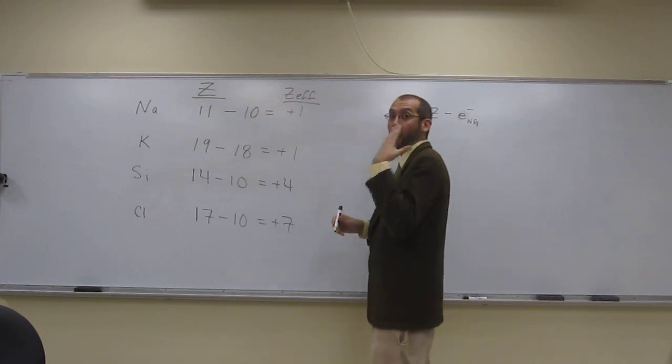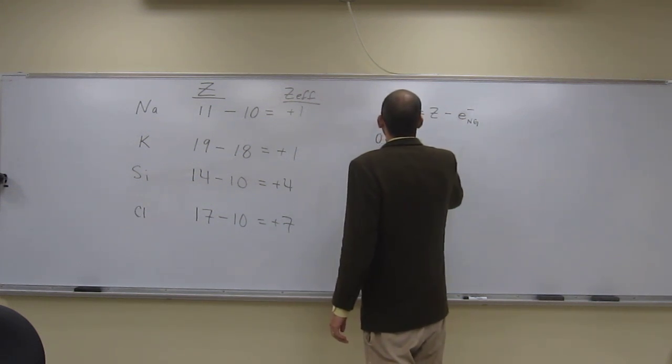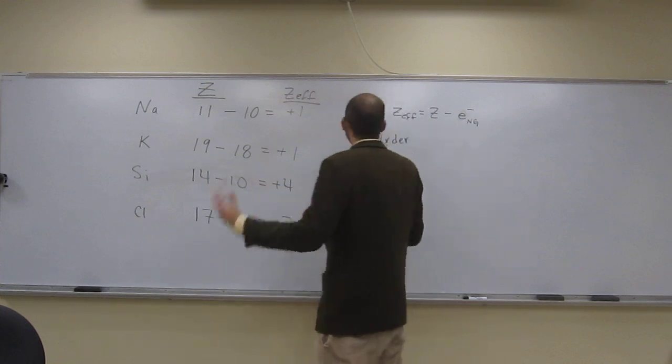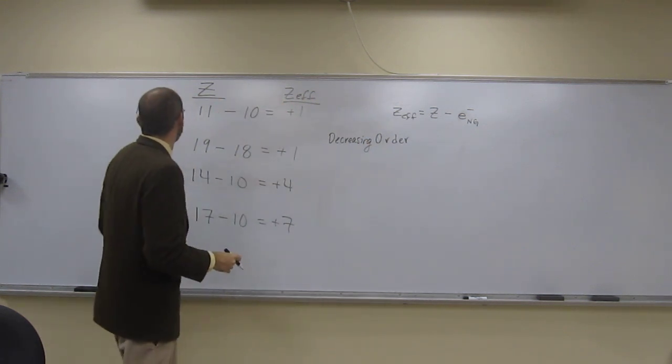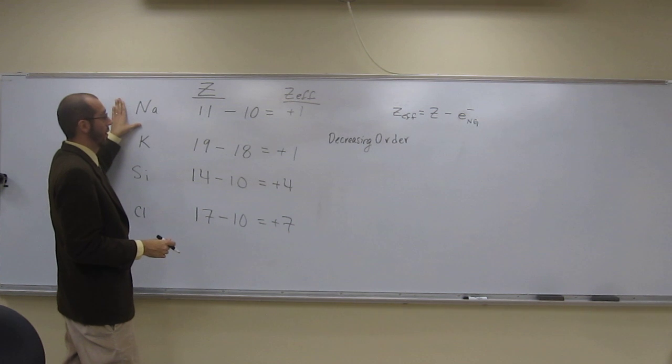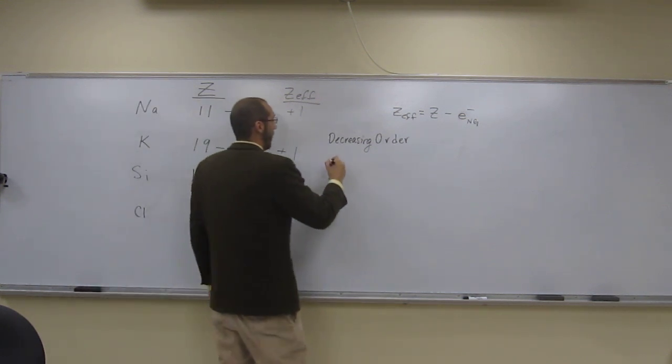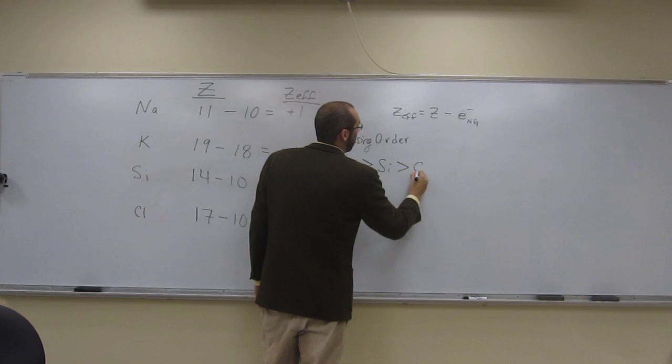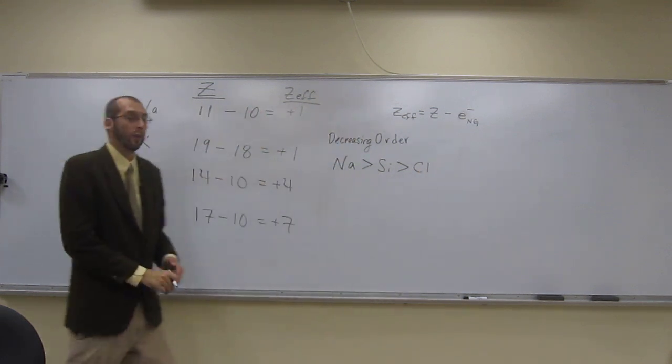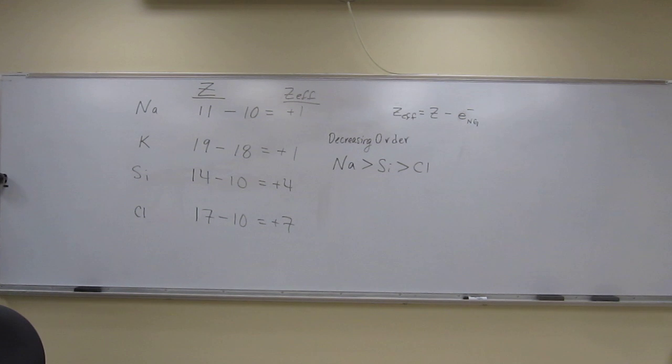So if we wanted to rank these in order, decreasing order we'll say, so that would be from biggest to smallest. And then we'll just look at those three that we were talking about. So we would say sodium is going to be bigger than silicon, which is going to be bigger than chlorine. Like that. Are there any questions on that? So that kind of hits up both of those points, I think.